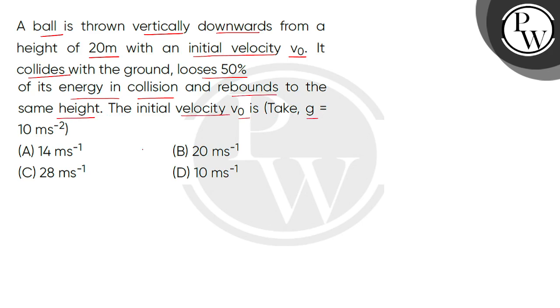We are given acceleration due to gravity value 10 meter per second square. So, first of all, we consider the ground surface. From 20 meter height, we consider H. One ball is thrown vertically downward with initial velocity V0.